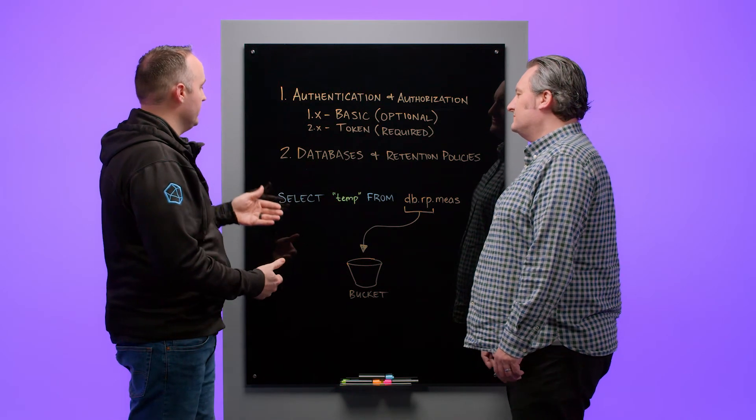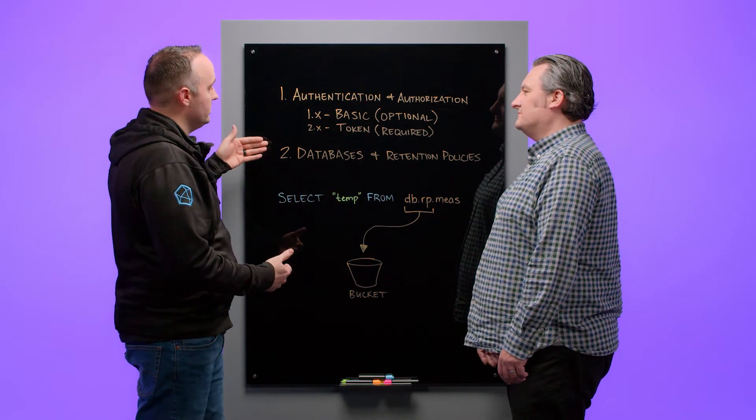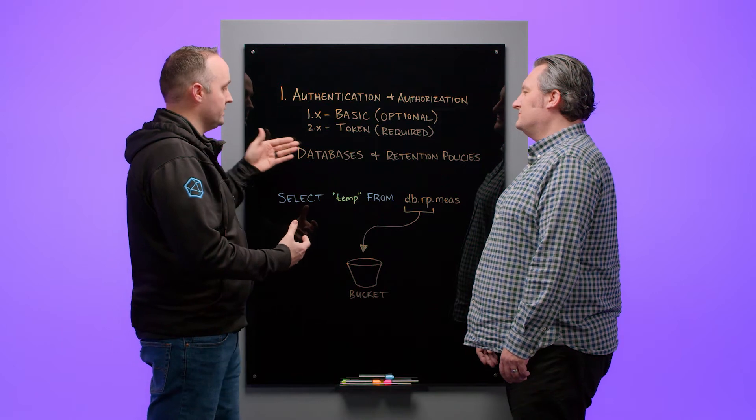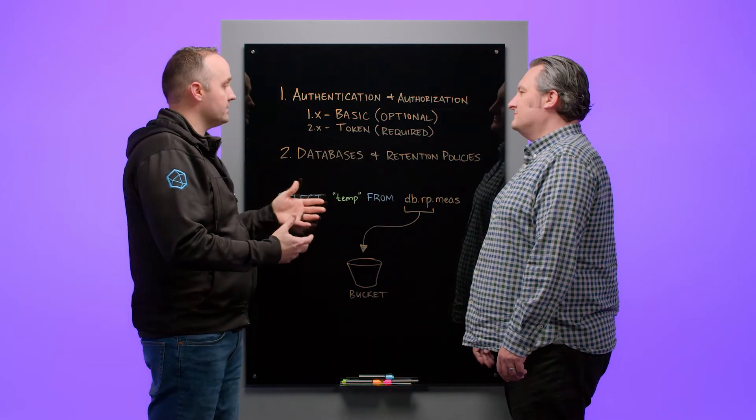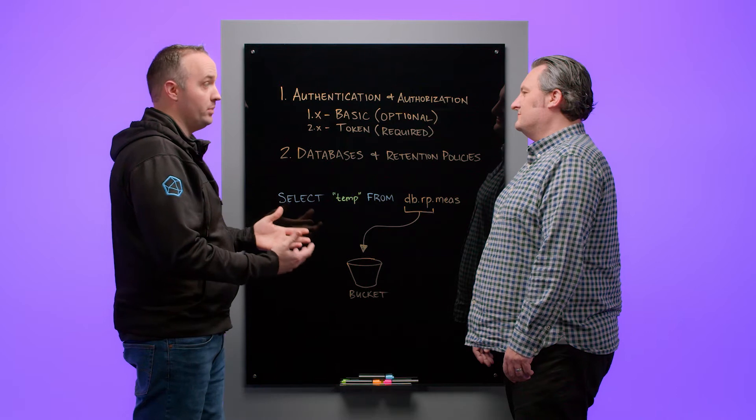The second major difference is in 1.x, part of the core data structure was databases and retention policies. In 2.x and Cloud, these have been replaced by what we call buckets.